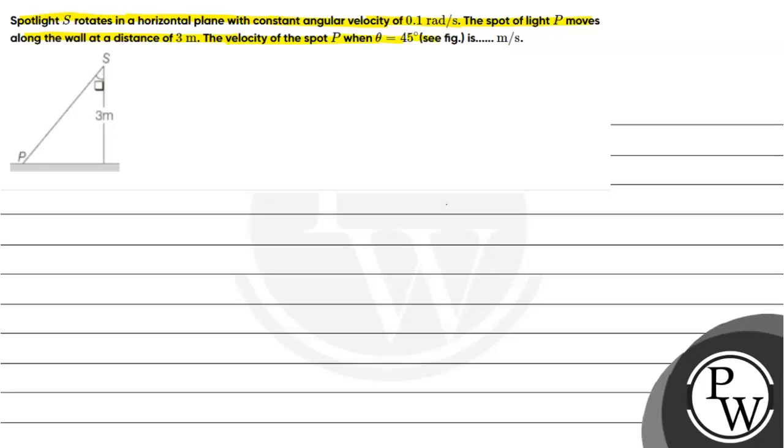The velocity of the spot P when theta equals 45 degrees is what we need to find. To answer this question, first we will discuss the key concept, and here the key concept will be angular motion, or we can say circular motion of a particle.